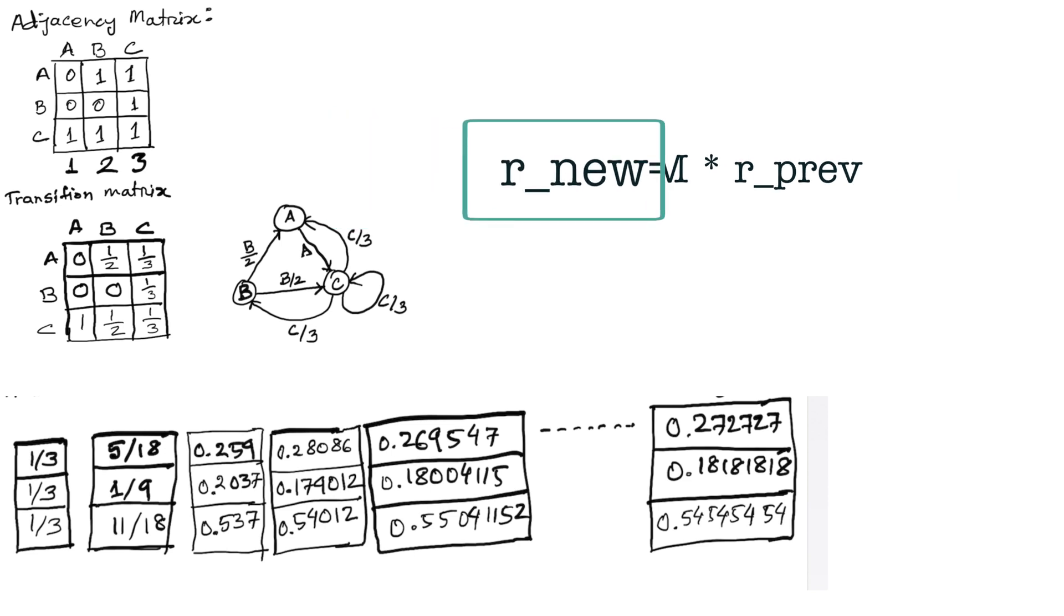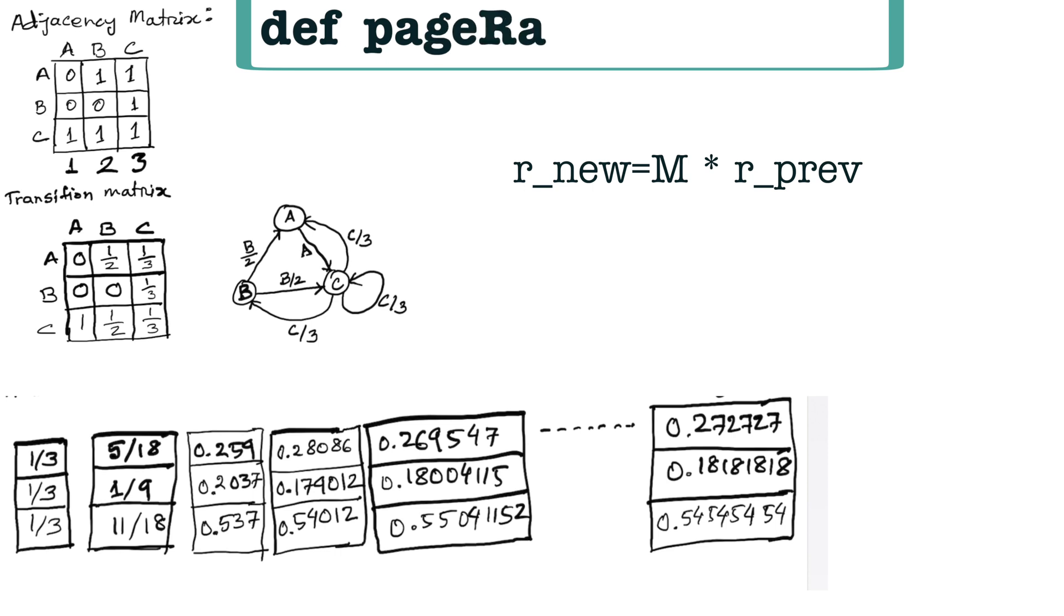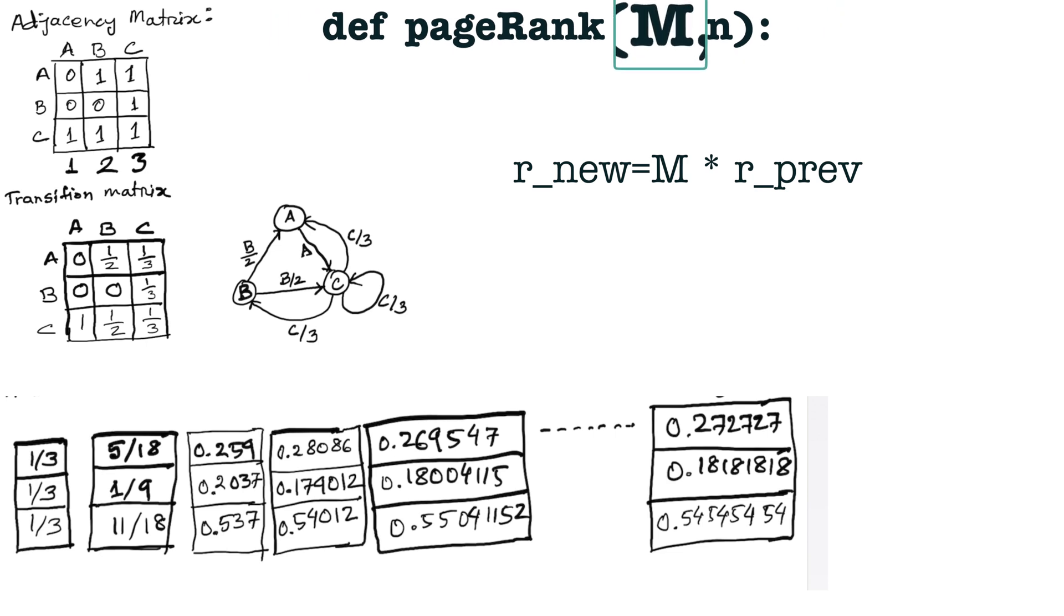Let us outline the pseudocode of the page rank algorithm. I will write the pseudocode in Python fashion. Let's say that we are writing a page rank function which has two parameters: the transition matrix, which is a column stochastic matrix, and the number of websites in the network. The second parameter is redundant because the number of rows or columns in the transition matrix equals the number of websites. We are still using the second parameter for better clarity.